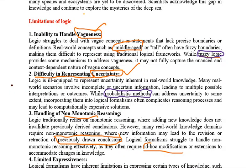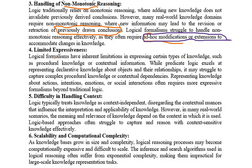The next limitation is limited expressiveness. We have some limitations in expressing certain types of knowledge. There are various types of knowledge — procedural knowledge and contextual information. Procedural knowledge is written in the form of a series of steps or procedures. Contextual information is written in the form of context. We have limitations in expressing these types of knowledge using logic.